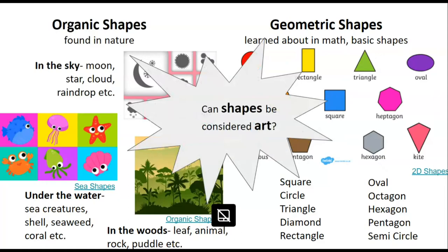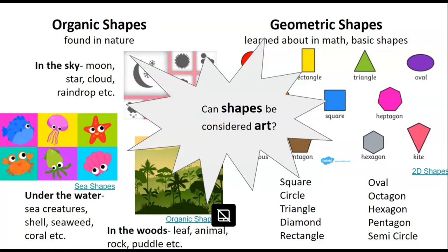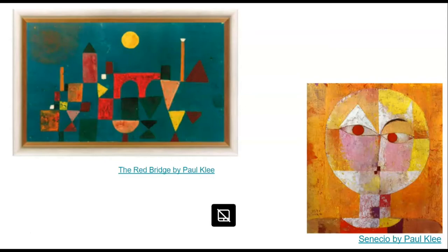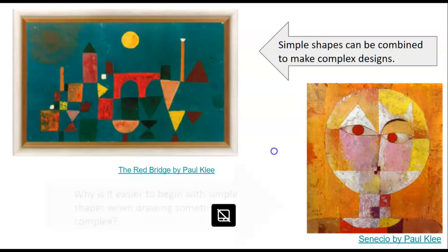Do you think shapes can be considered art? Are the shapes in these two groups art yet, or do we need to do something with them first? These are two paintings by artist Paul Klee. On the left side we see the Red Bridge, and on the right side we see a beautiful portrait. Simple shapes can be combined to make complex designs. This little city with the bridge and the landscape was made by combining simple shapes, and the portrait was made the same way.